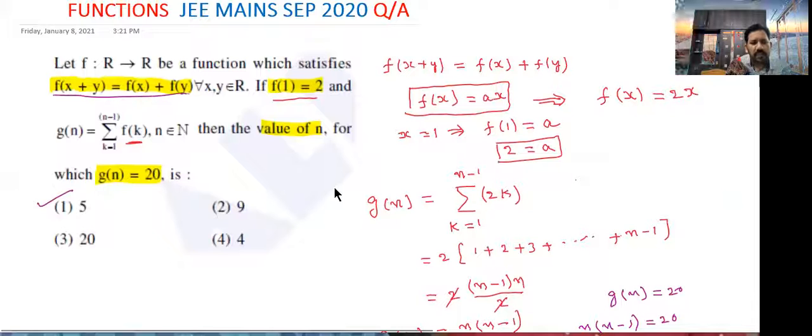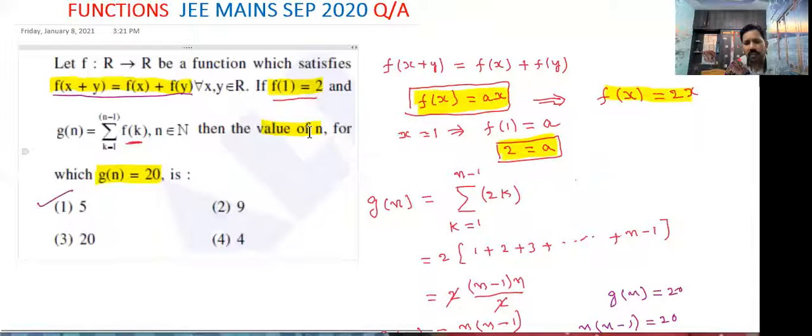And observe here one more question here. F of x plus y is equal to f of x plus f of y when the condition exists means if the function f of x is equal to ax we are taking this. So f of one is equal to, given in this case we got the a value is two. The function is f of x is equal to two x.